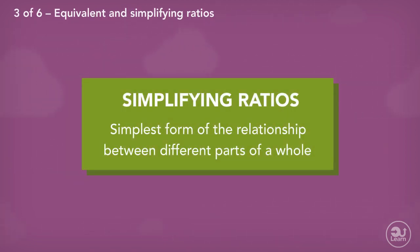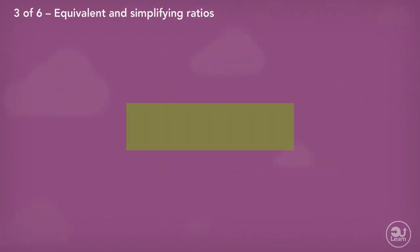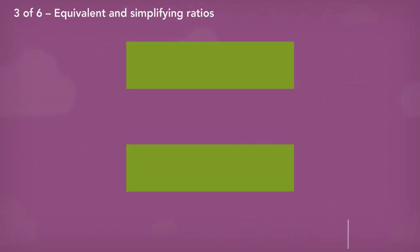When simplifying ratios, we are trying to find the simplest form of the relationship between different parts of a whole. Looking at this block, it represents a whole. Looking at this second block, it represents the same whole as the first block. I'll colour in the blocks with the same amount of colours.